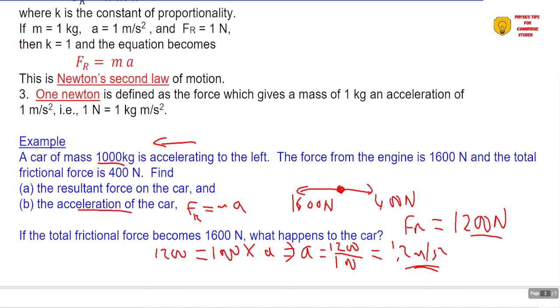Then it says if the total frictional force becomes 1600 Newtons, what happens to the car? Now we've already said that the force from the engine is 1600 Newtons. And now if the frictional force builds up to be 1600 Newtons, then there won't be any resultant force. In other words, the acceleration will be zero. So the car would continue moving with a constant speed or at a constant speed.